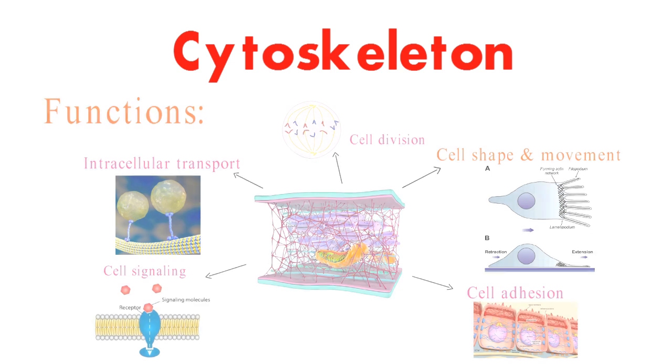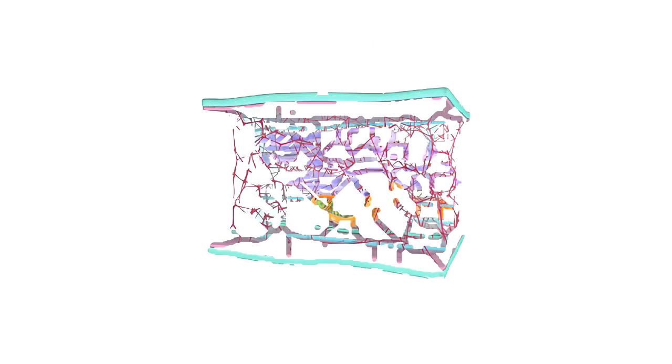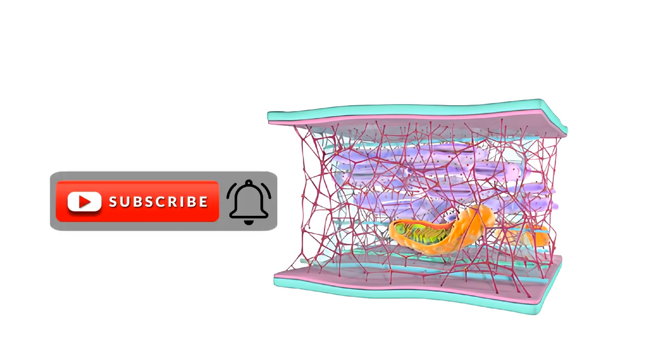So, the cytoskeleton is a complex and essential part of the cell. It plays a vital role in many cellular functions, including cell shape, movement, division, and signaling.